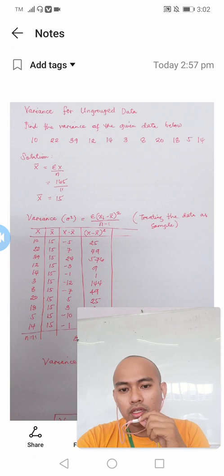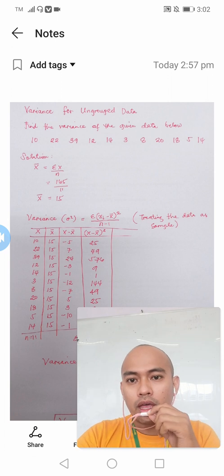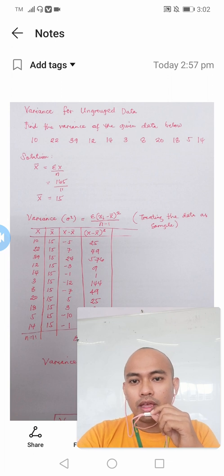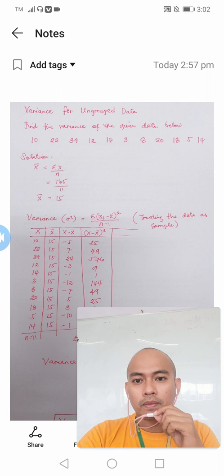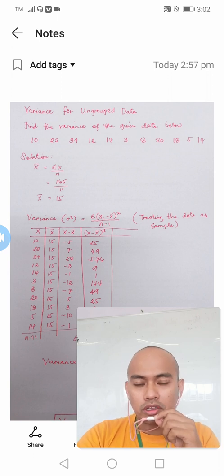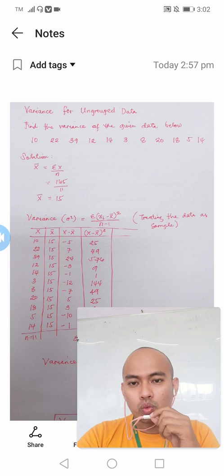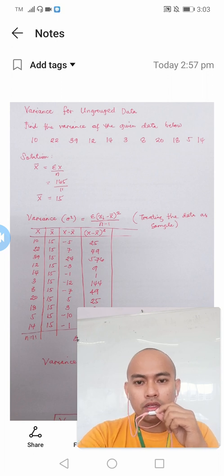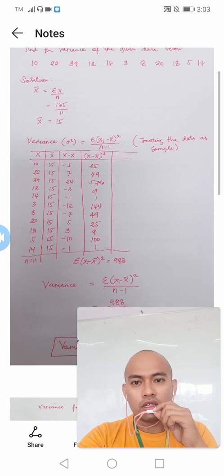Using the arithmetic mean, we will be having 165 as the sum of the elements presented in the data over 11, which is the total number of observation. So if we divide 165 by 11, the result will now be equal to 15. So this 15 will be the mean of this given data set.